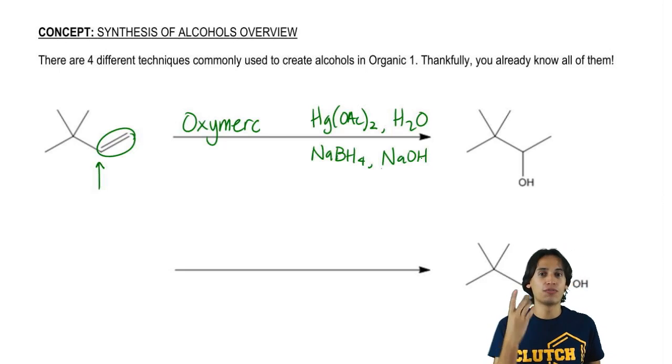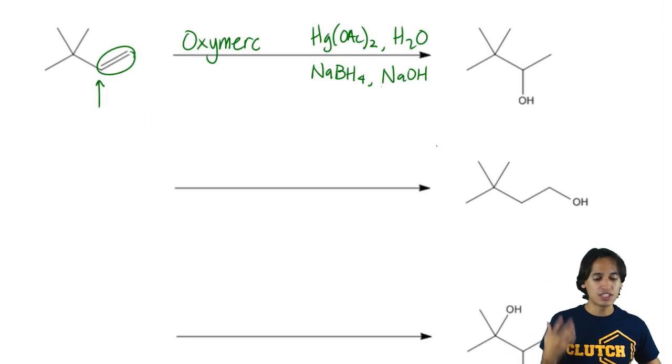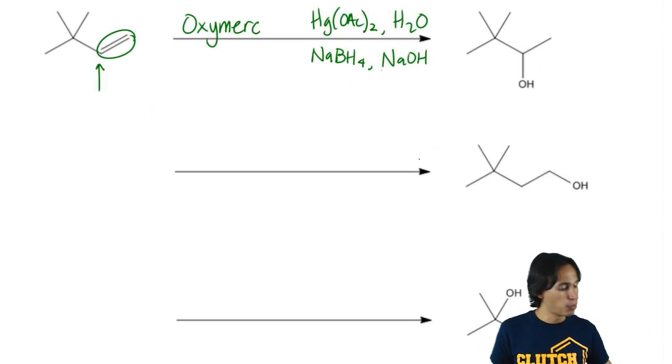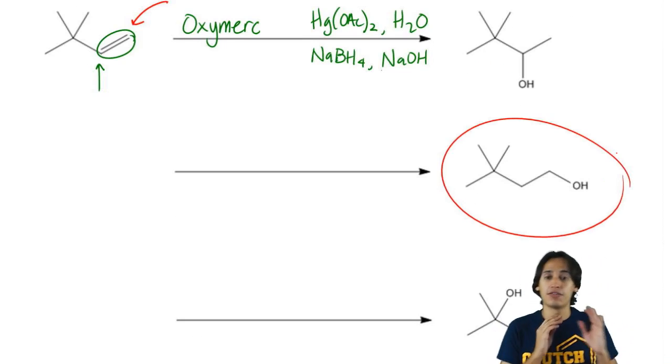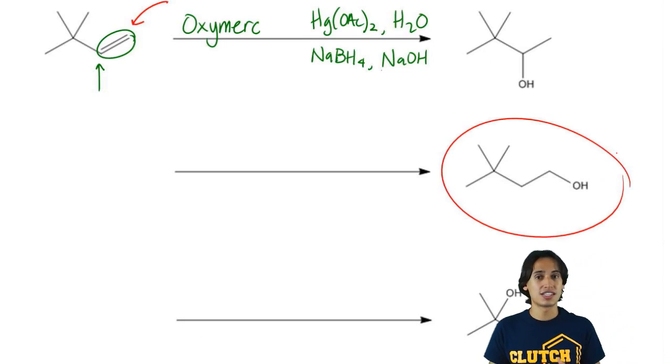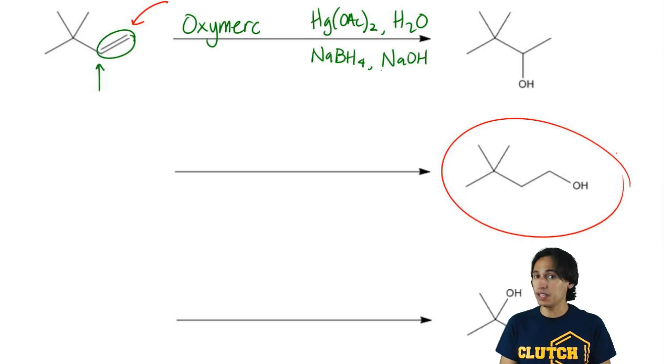So we've been over one of the four ways, but let's keep going because it turns out that there's a lot more that we can do to a double bond. So what if we take that same double bond, but we want to add the alcohol here instead? Notice that in this molecule, I have the alcohol on the least substituted position.